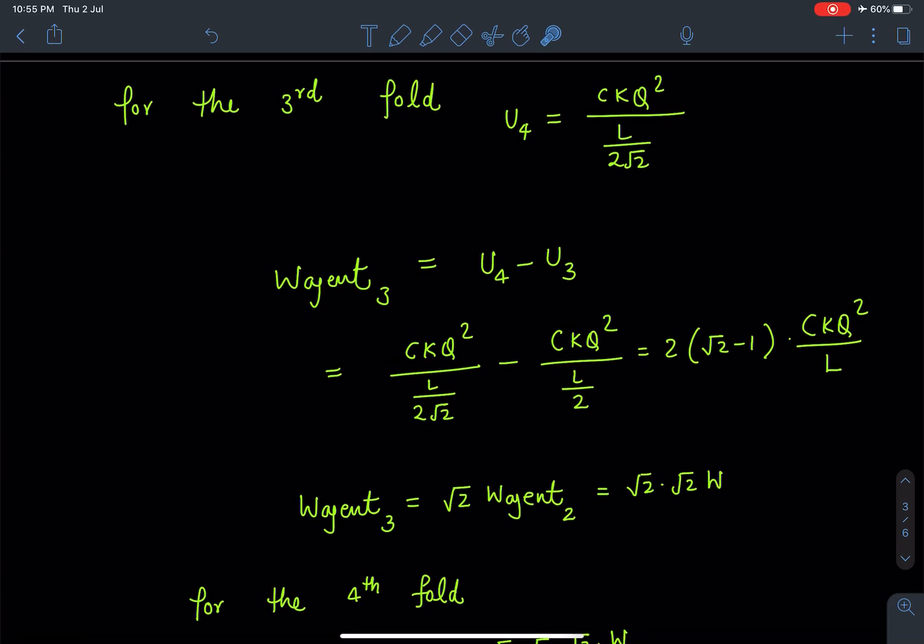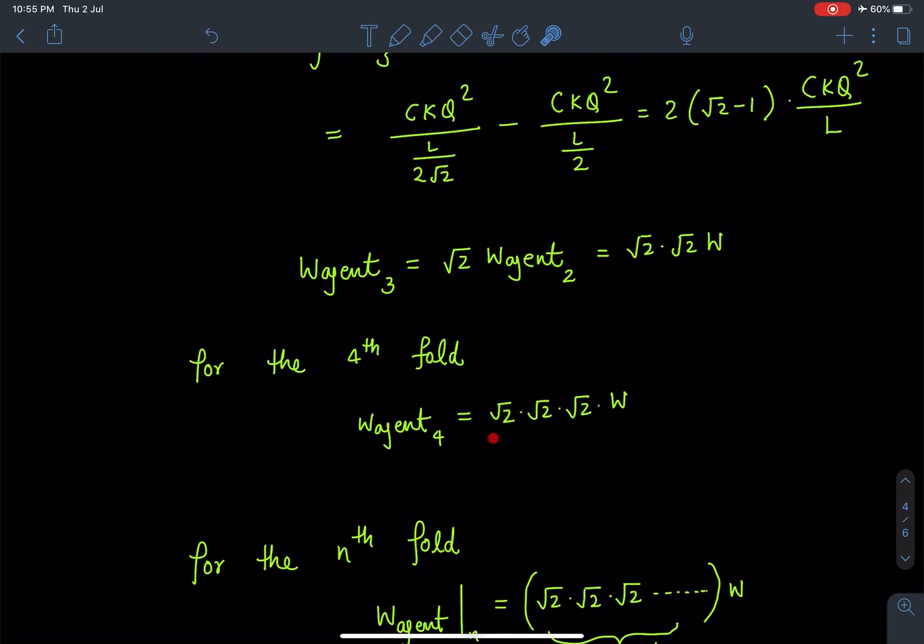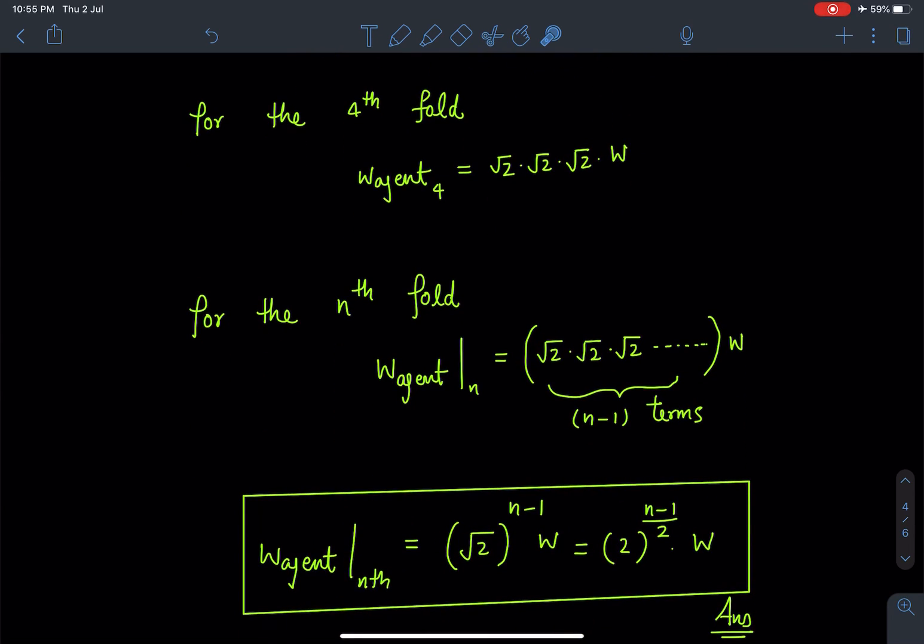similar to previous method, which I can write as √2 times √2W. Then for fourth fold similarly I'll be writing it as √2 multiplied by √2 multiplied by √2 times W. So when fourth, I'm writing here 3 times √2, W is coming.